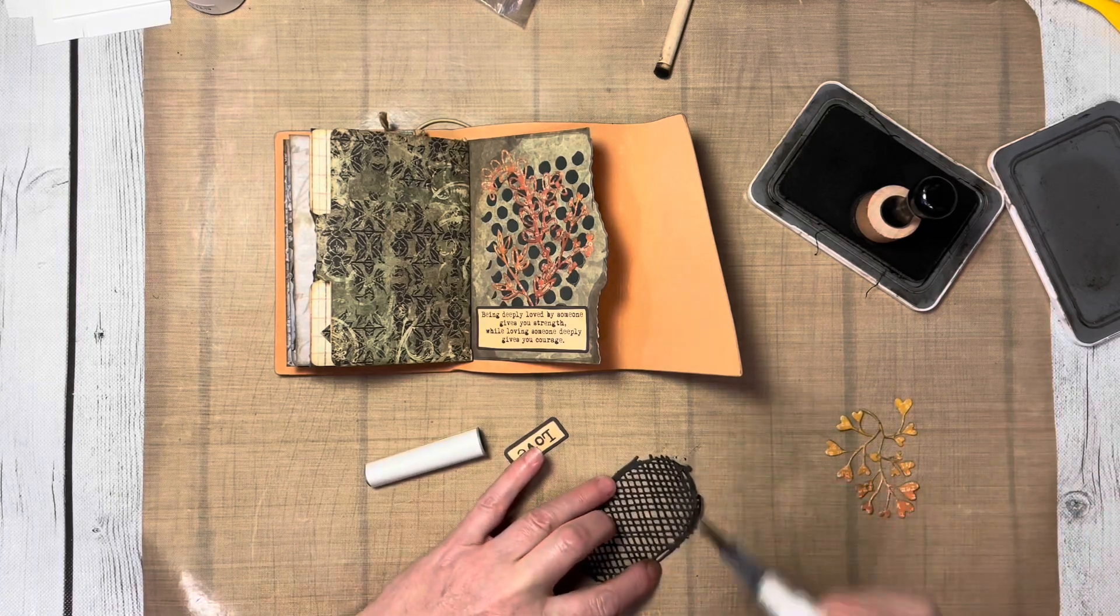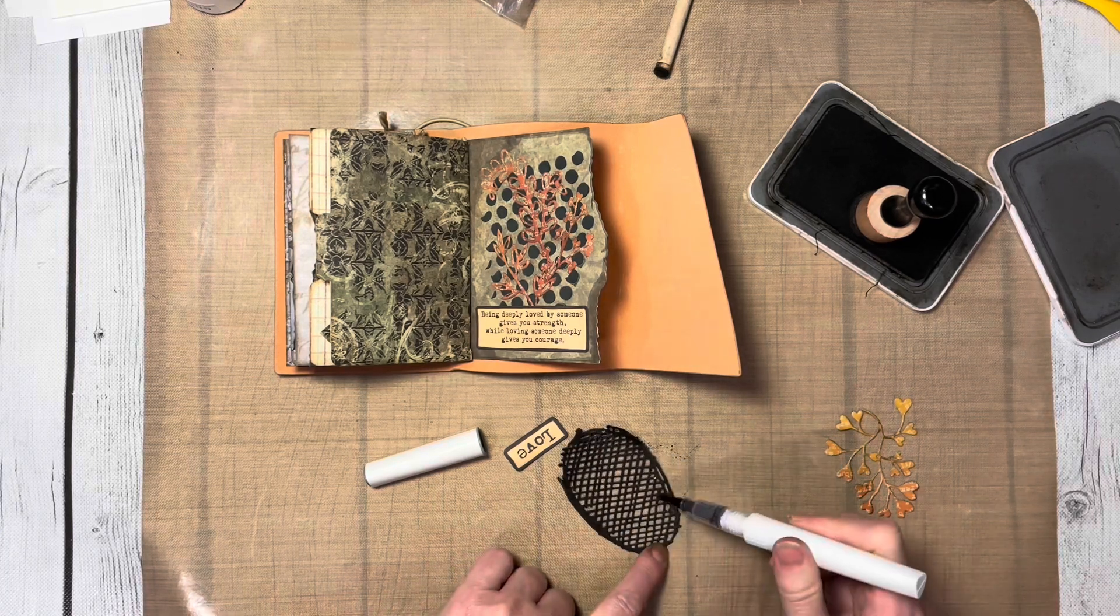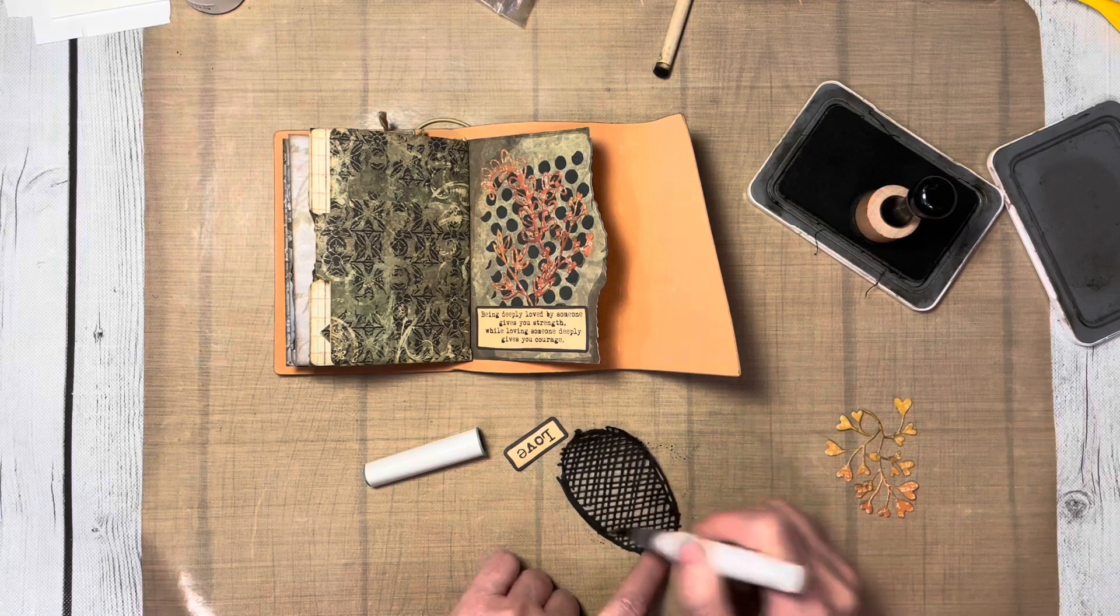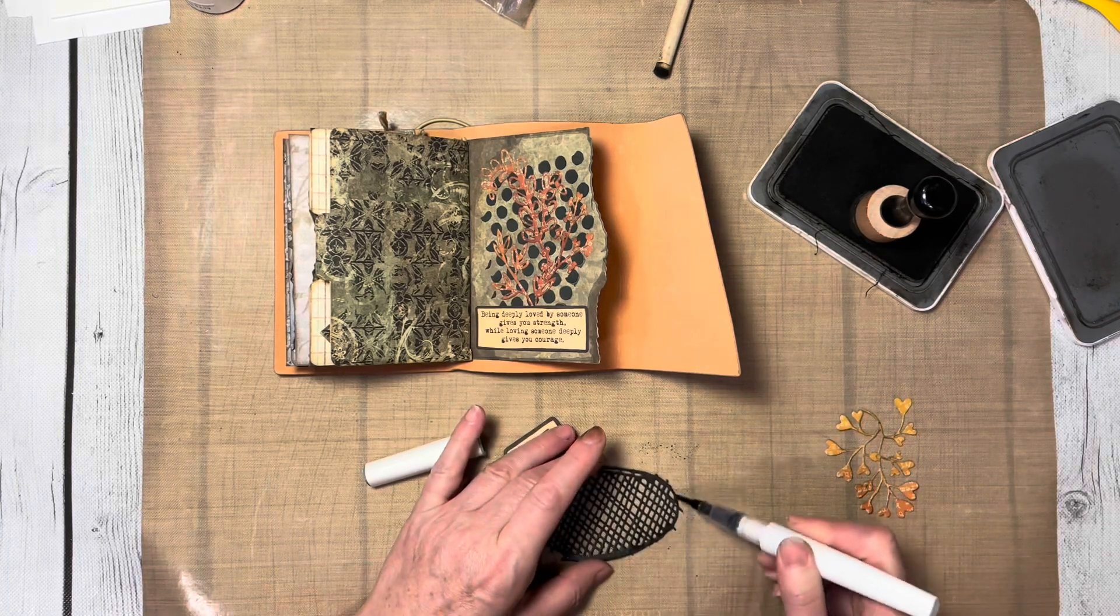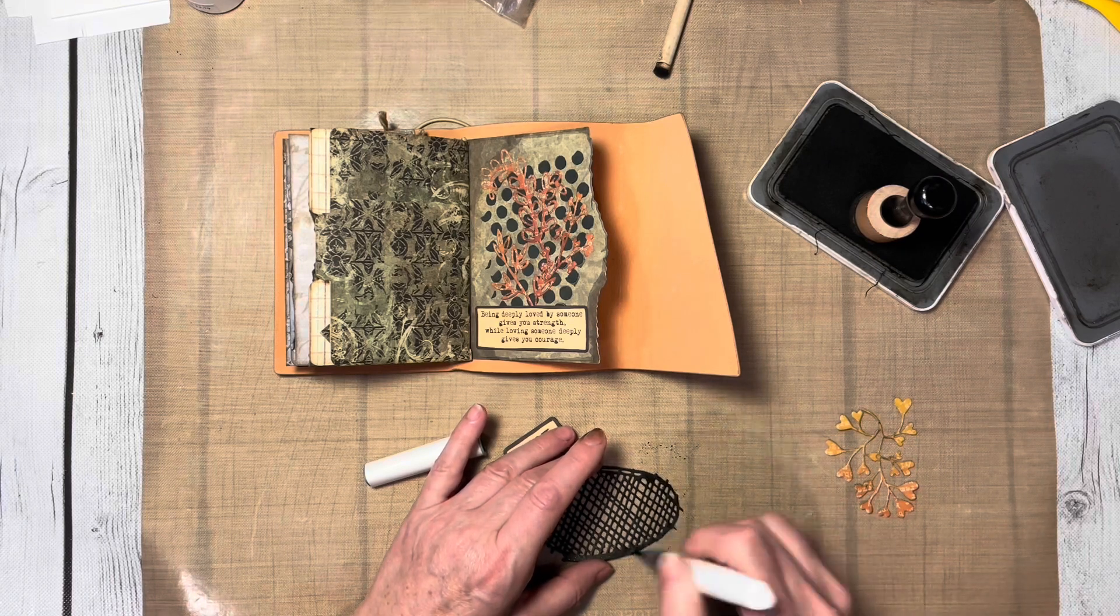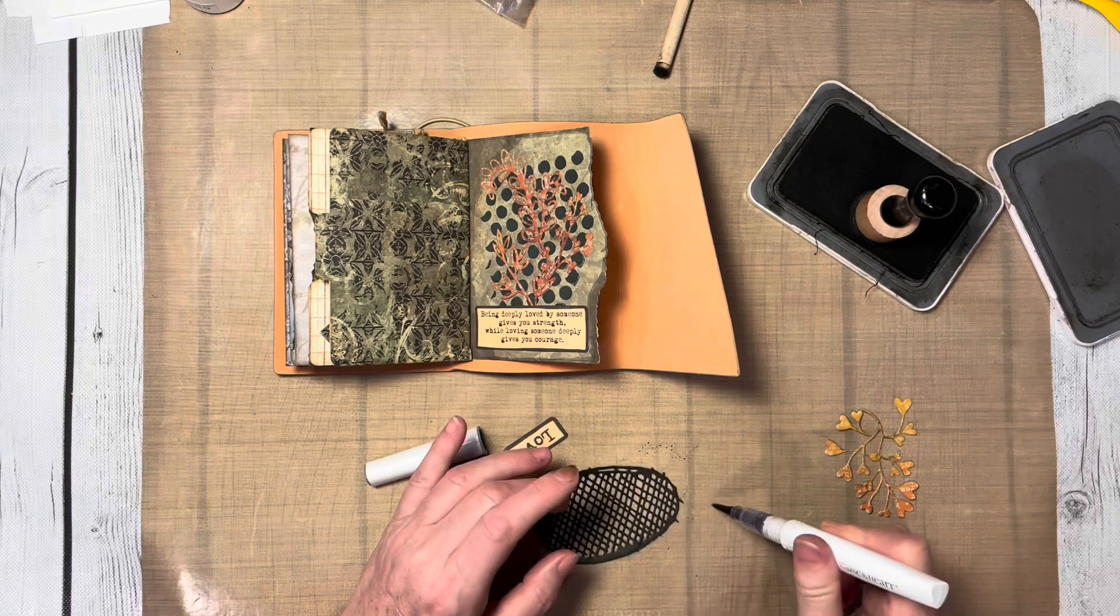I did this technique on my previous journal page and thought I'd do it again. I'm adding shimmer from a shimmer brush, like a Wink of Stella, all over this black mesh. I just want it to sparkle and stand out underneath everything I'm going to layer on top.